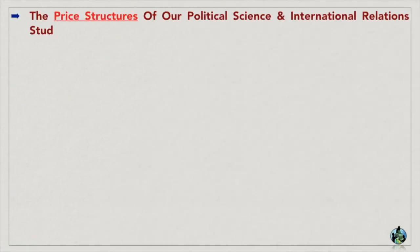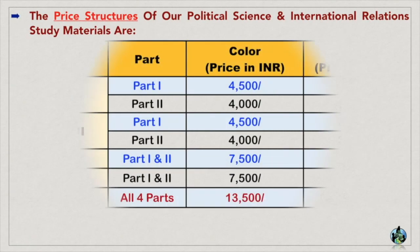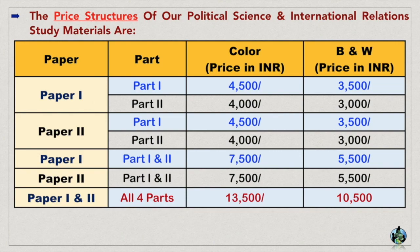The price structures of our political science and international relations study materials are as follows. As you can see in this table, we provide our study materials covering the complete syllabus, i.e. full package, or in part as well. If you want only part 1 of paper 1, you can buy only that or a combination of any. The colour study materials have not only colourful print but also images and maps given on glossy papers, which are not only attractive but also easy to understand.